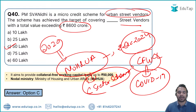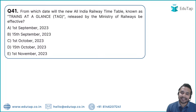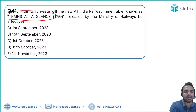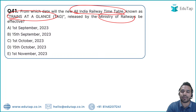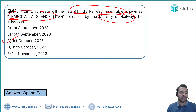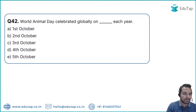Question 44: The Ministry of Railways has launched its 'Trains at a Glance' — an All India Railway timetable document.